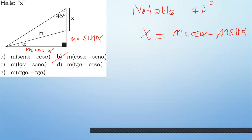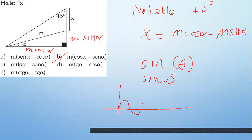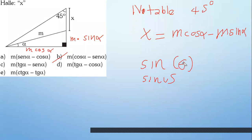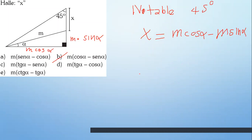¿Alguien ha notado por qué escribo sin? En otros países también usan la palabra sin, que viene del latín: sinus, sinusoide. Es una figura que oscila de esta manera. Por eso escribo sin, pero en el español hablamos con seno. En sus resultados siempre ponen completo. Estas son razones trigonométricas.